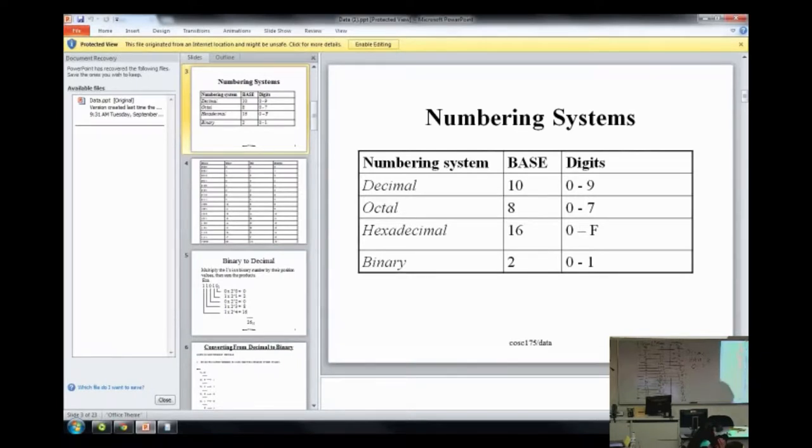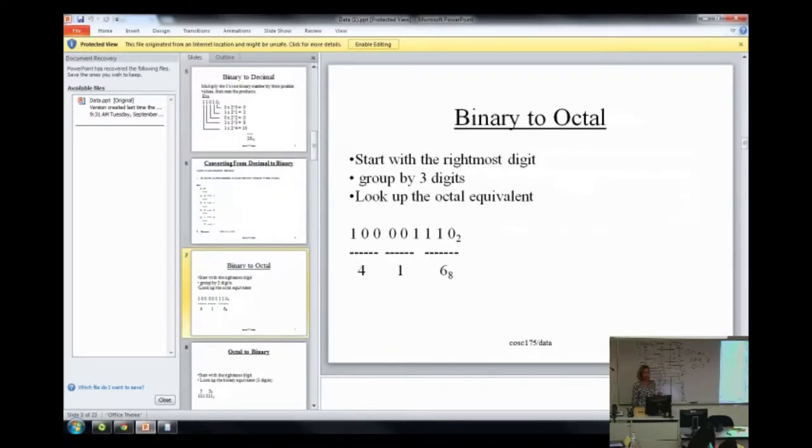Now, octal is used because it's a more convenient way to represent binary. So a lot of programmers use octal rather than writing the long binary values. It's a little more convenient to represent binary this way. And hopefully you'll get used to automatically doing some of the conversions. So here's how we convert from binary to octal.